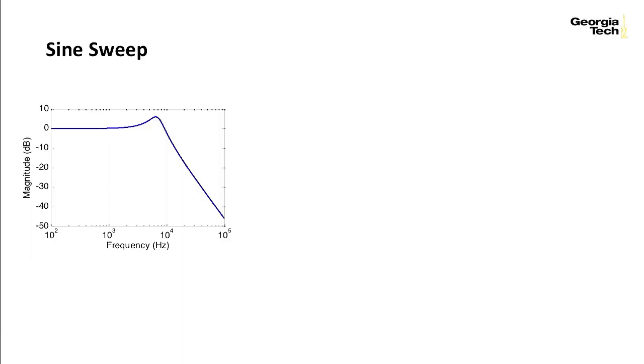Let's examine the underdamped case experimentally using a method that we call a sine sweep. Recall that 20 times the log of the amplitude is the same as taking 20 times the log of the output amplitude over the input amplitude of the two sine waves.